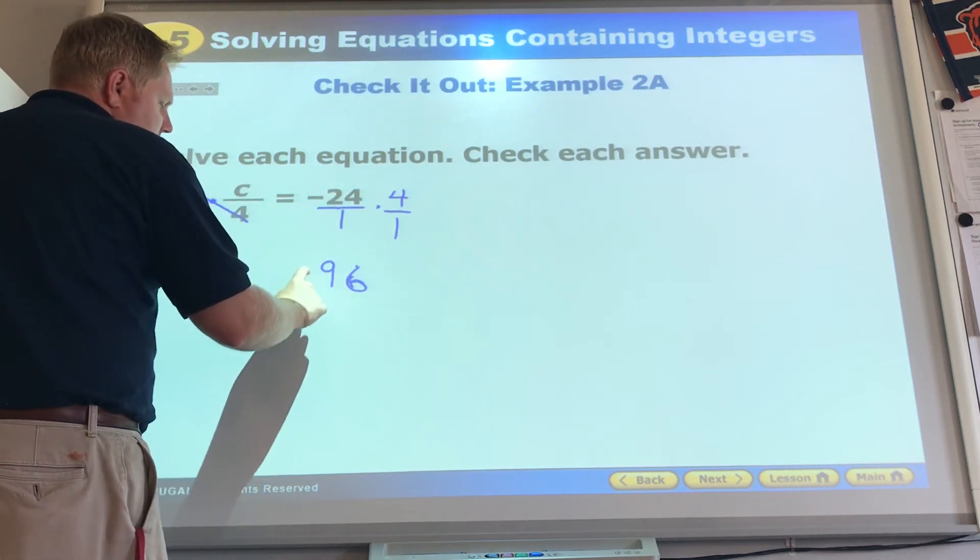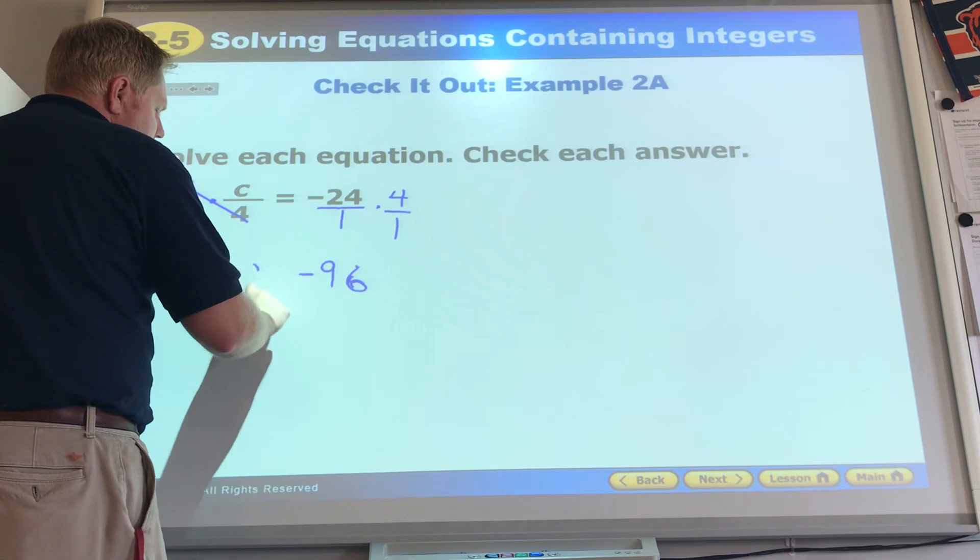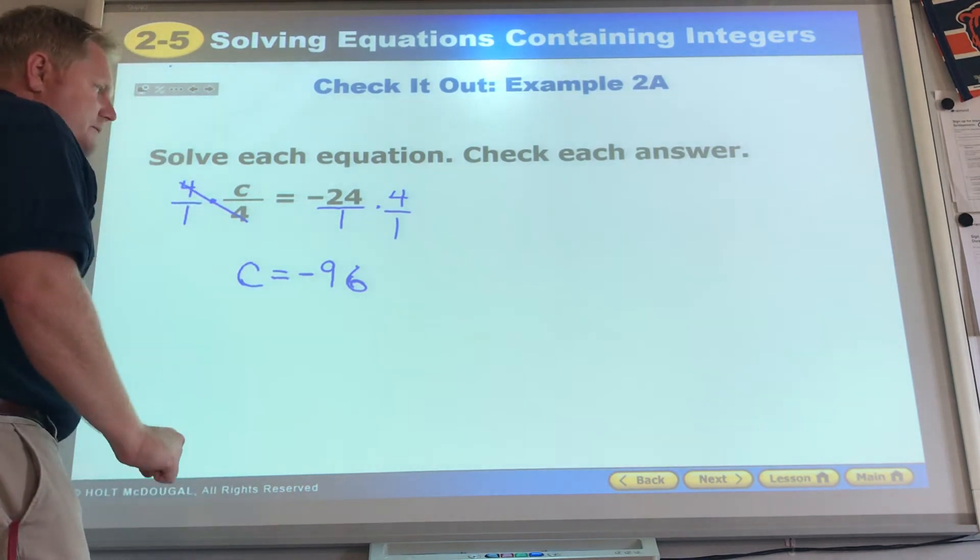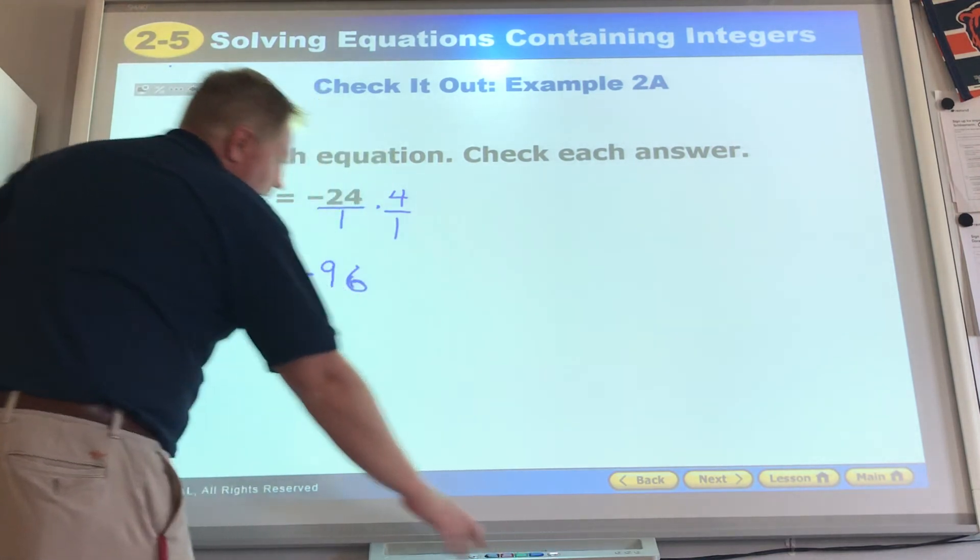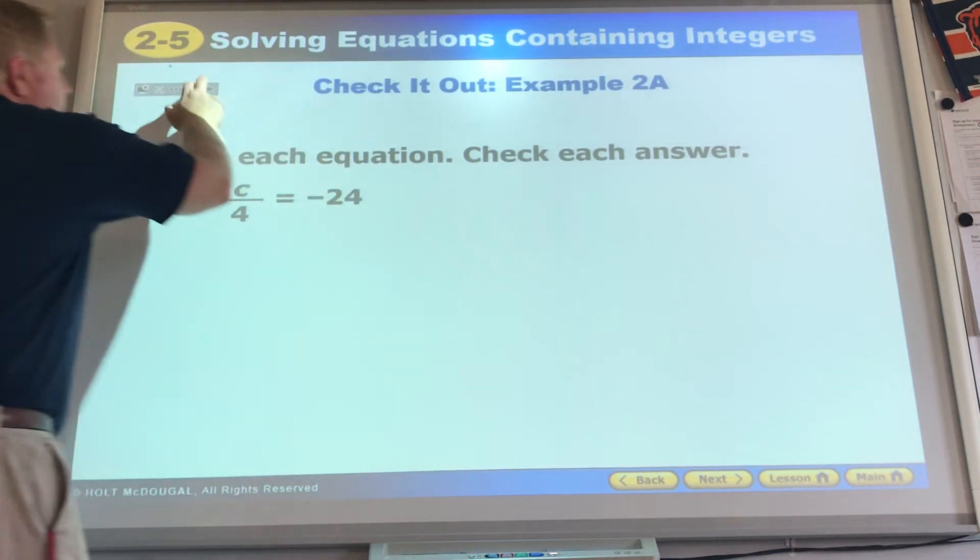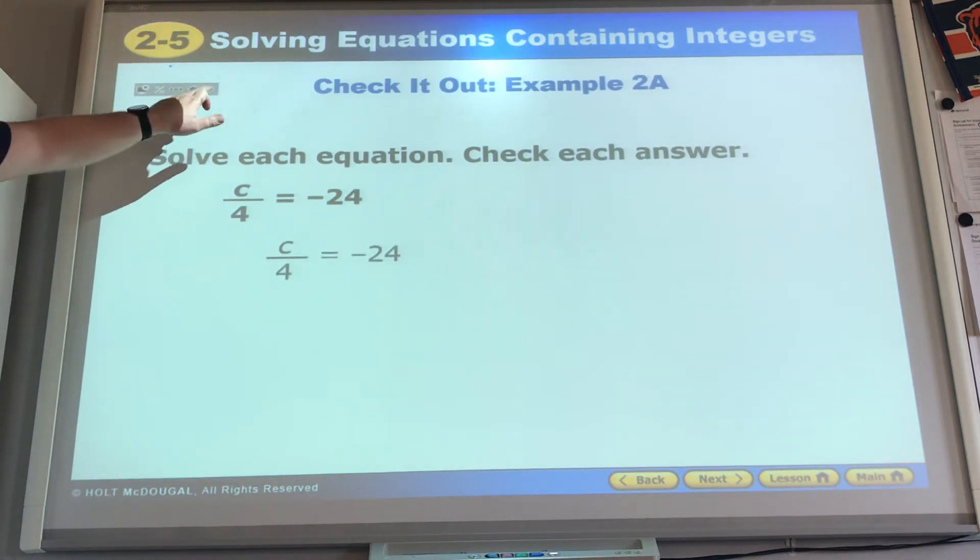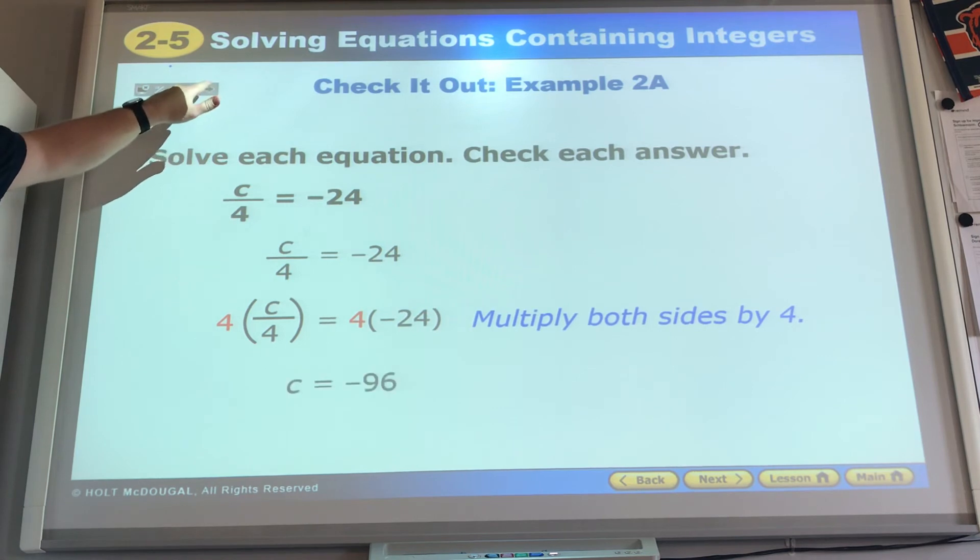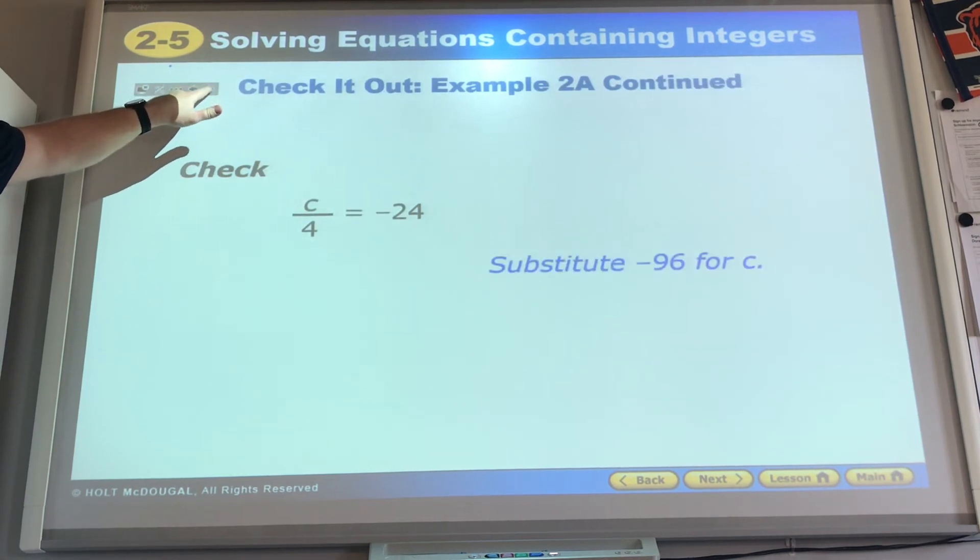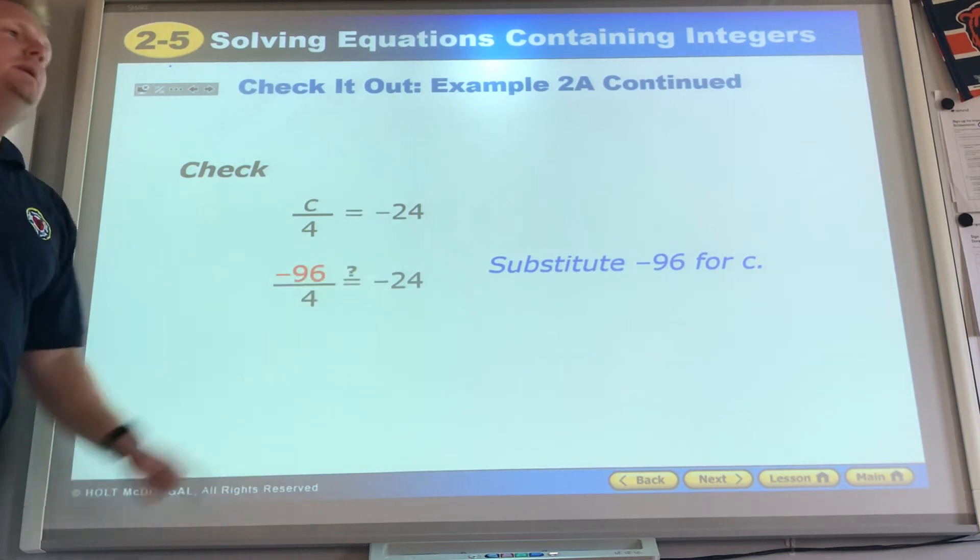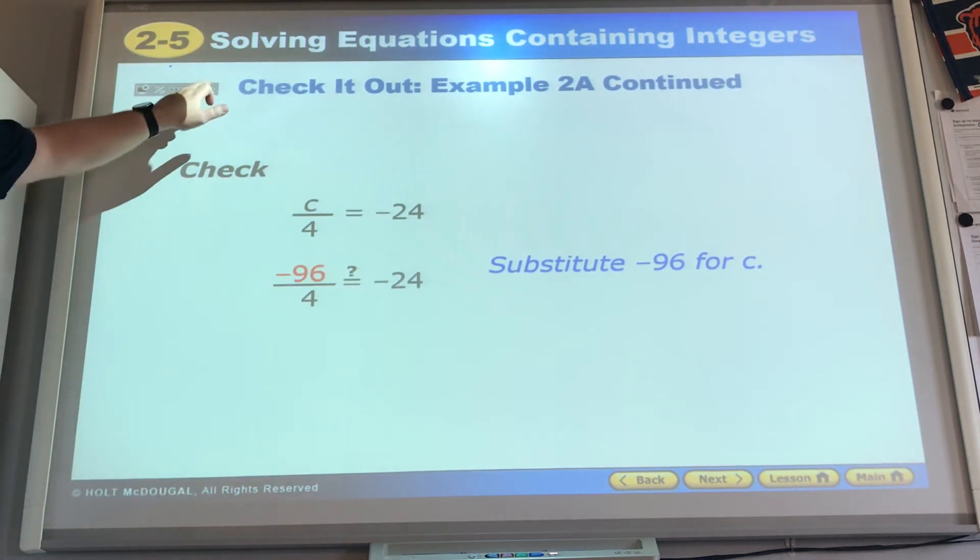96. Yes, 96. 1 is positive. 1 is negative. Negative is your answer. C equals negative 96. Let's make sure we do what we need to do. They saw this. They multiplied both sides by 4. They got negative 96. We plug it back in. Negative 96 divided by 4. That does make negative 24. It checks out and we are good to go.